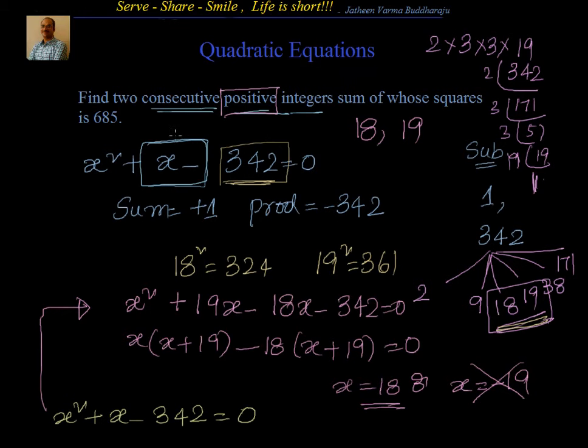Let us check that. Let us square them out: 18 square plus 19 square. 18 square is 324, 19 square is 361. You just add them up, you will get 685. So we are good to go.